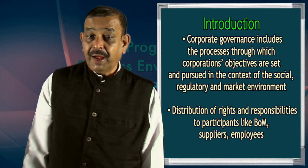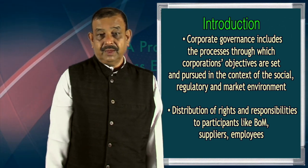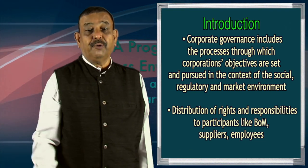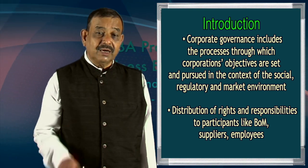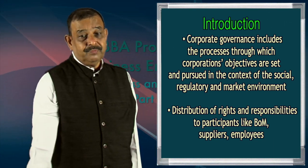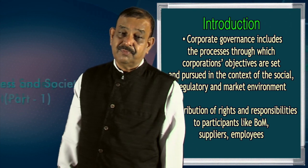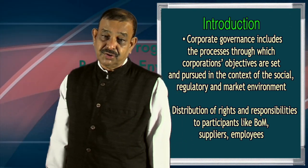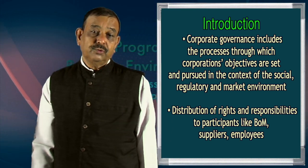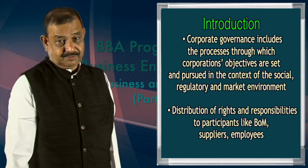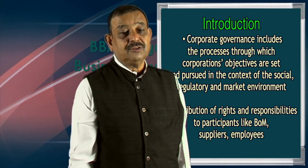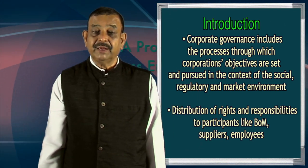For example, many organizations evade taxes — they do not pay taxes and do wrong things to avoid them. But in a market environment, one is supposed to earn profit by paying all legal dues. At the same time, an organization cannot achieve its objectives without meeting its social obligations. So corporate governance includes the processes through which corporations' goals are set and how those goals are pursued in the context of the social, regulatory, and market environment.